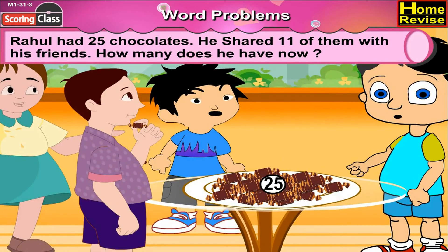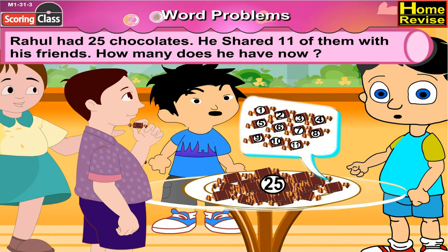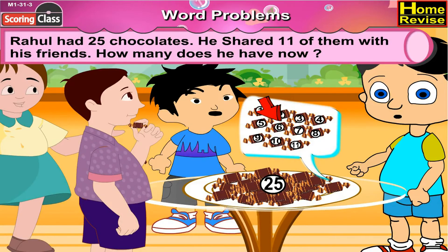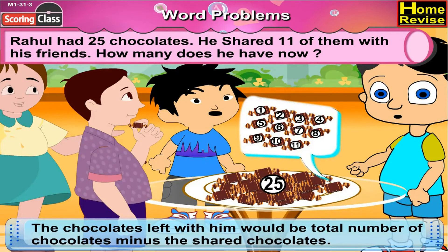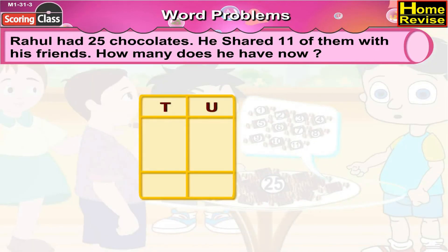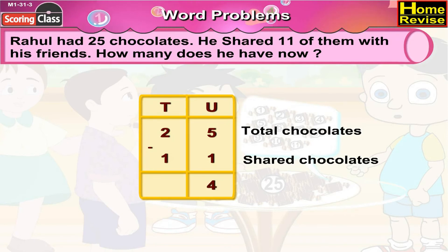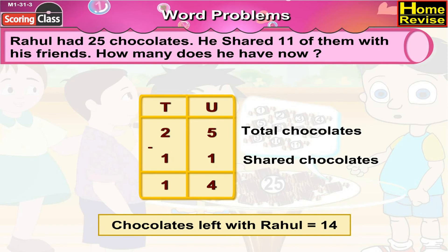Rahul had 25 chocolates. He shared 11 of them with his friends. How many does he have now? Total number of chocolates Rahul has: 25. He shared 11 chocolates. The chocolates left would be total minus shared, that is 25 minus 11. Units: 5 minus 1 is 4. Tens: 2 minus 1 is 1. So, the chocolates left with him are 14.